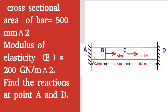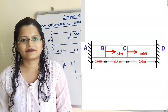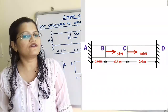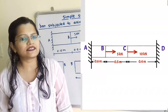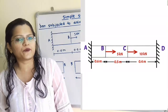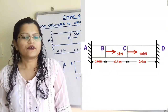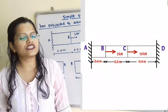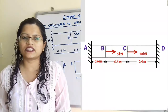Given question: cross-sectional area of bar is equal to 500 mm square, modulus of elasticity is equal to 200 giga Newton per meter square. Find the reactions at point A and D. This is the question of a bar subjected to axial forces with rigid support at both ends. We have to find out the reaction at point A and reaction at point D.